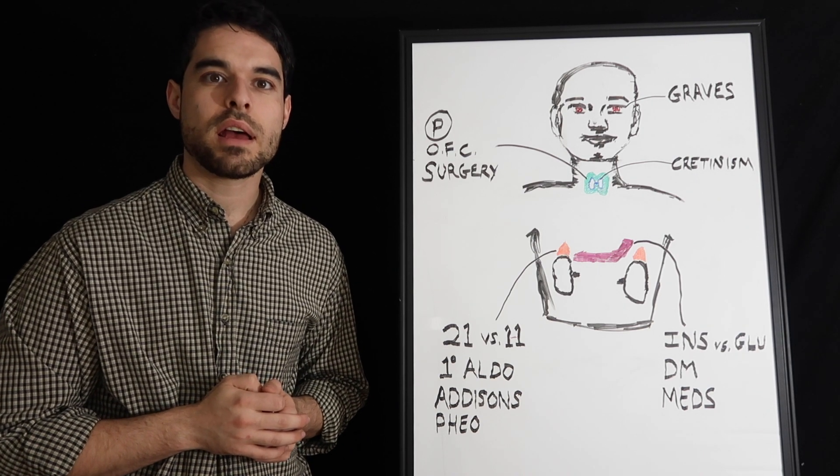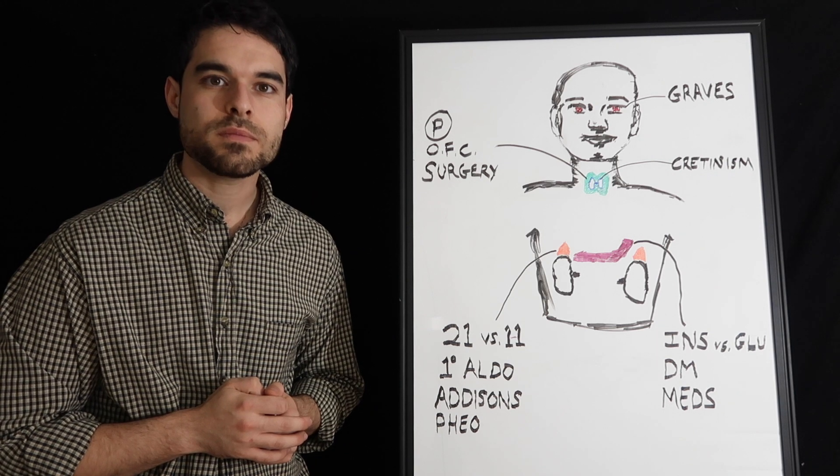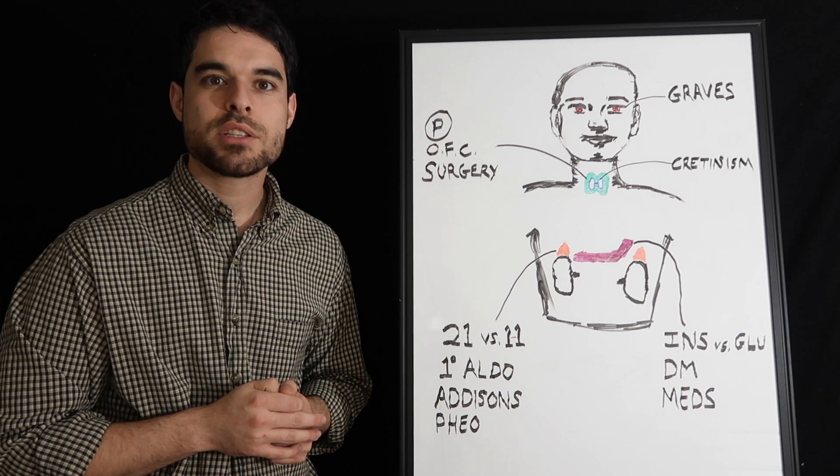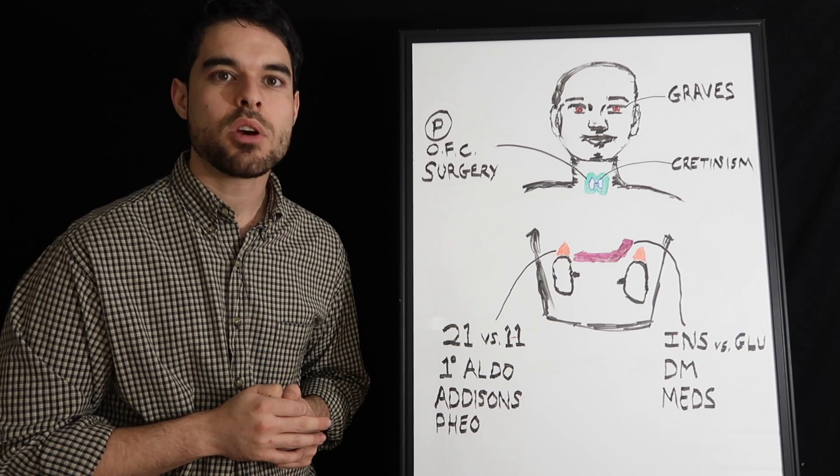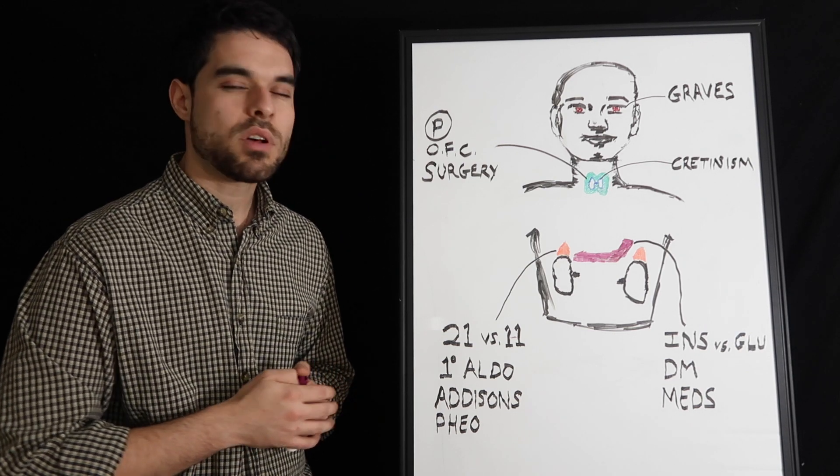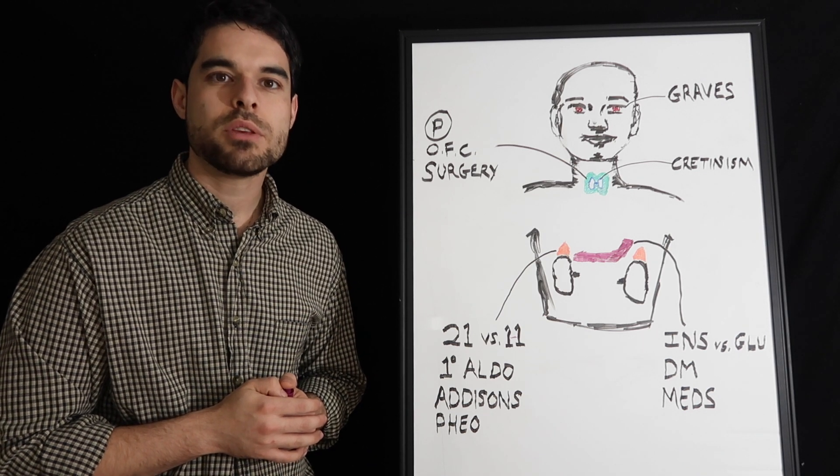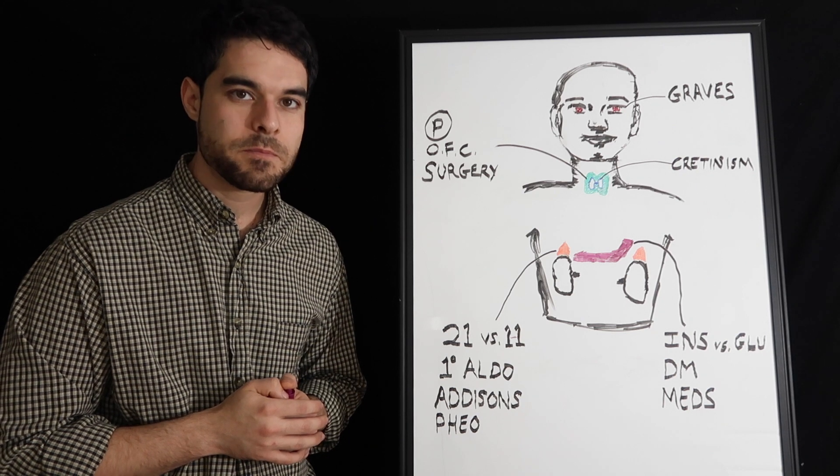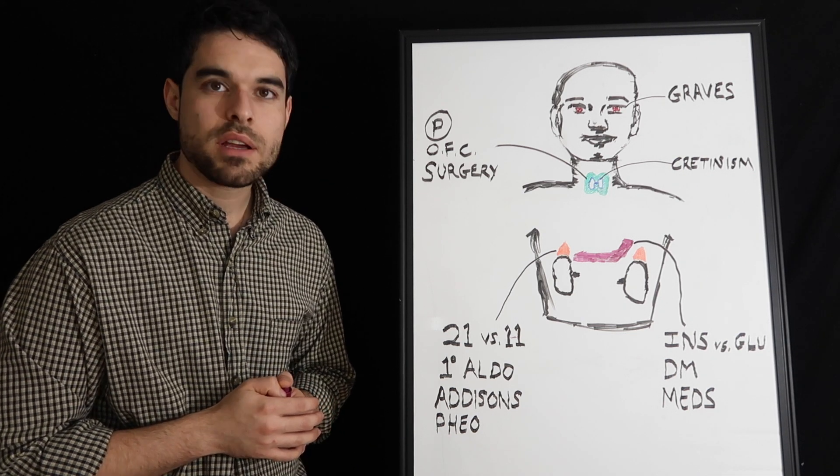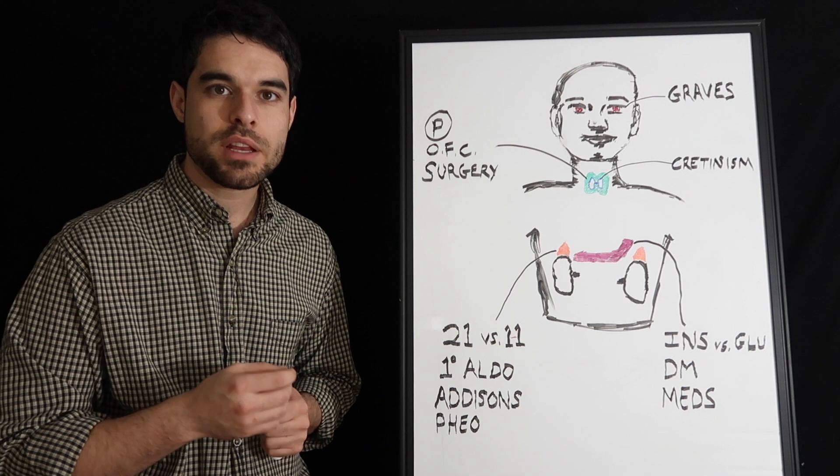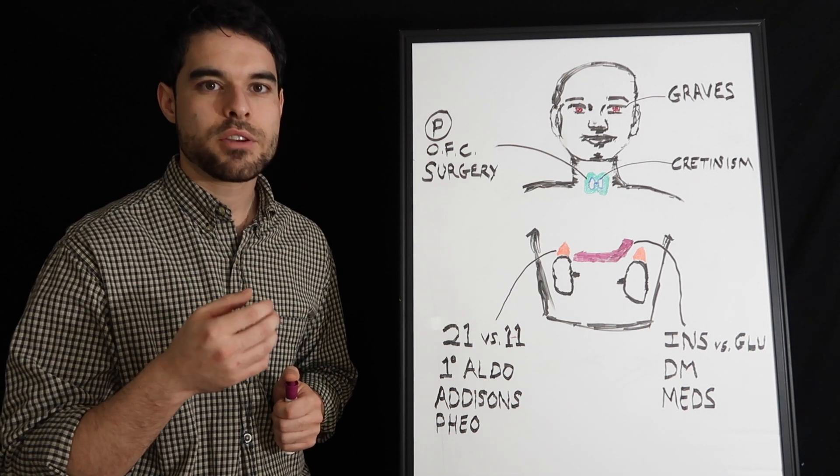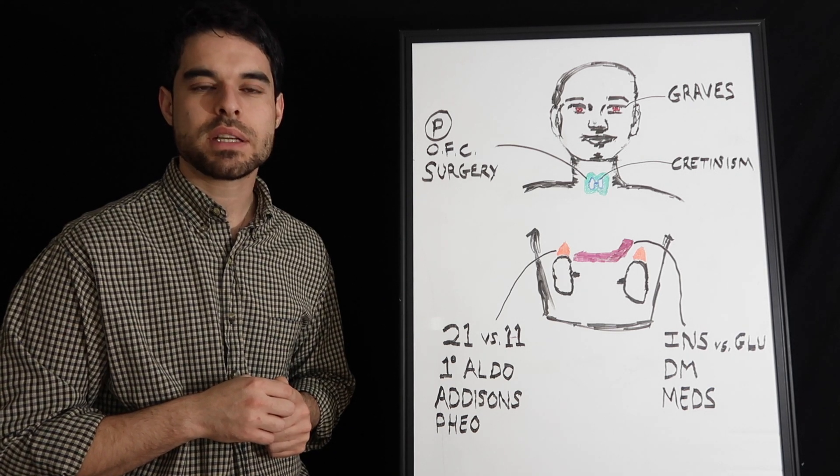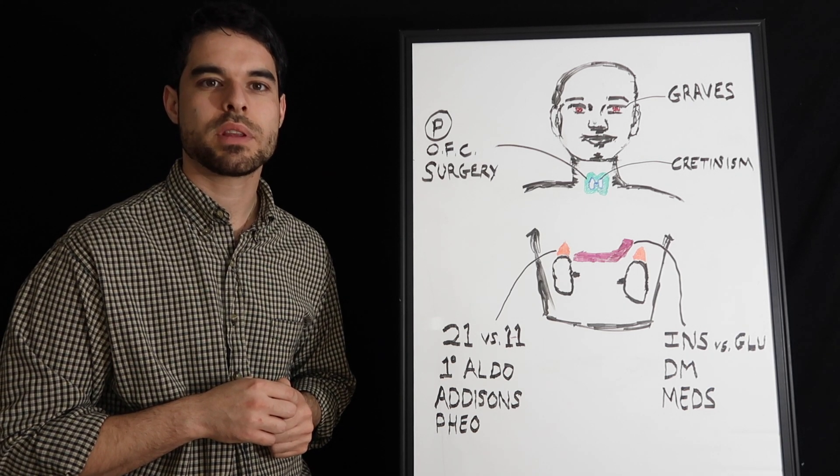Next, we have primary hyperaldosteronism. Important to know that because the problem is with the gland, renin is going to be suppressed. So you have a low renin. You do have a lot of salts and you are losing potassium. But you don't have edema because of the aldosterone escape mechanism. The treatment is going to be that you are keeping too much salt and you're losing potassium. So you want to give them a diuretic. Eplerenone is the best one because it's a potassium sparing diuretic with a good profile.